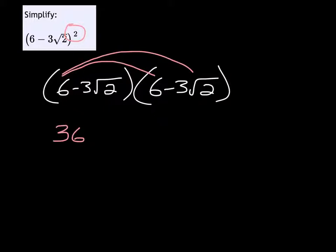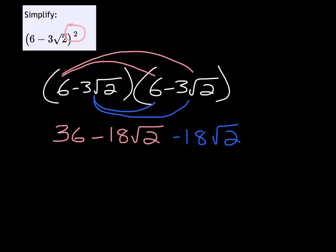And then multiplying this negative 3 root 2 by the 6 is another negative 18 root 2. And the negative 3 root 2 times the negative 3 root 2 gives us a positive 9 root 4.